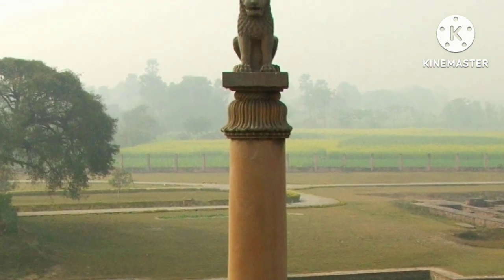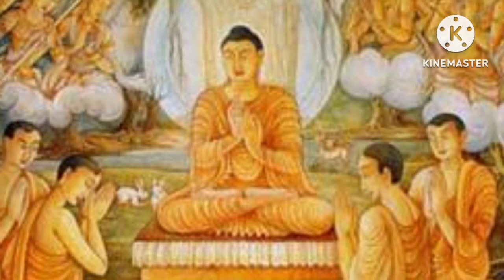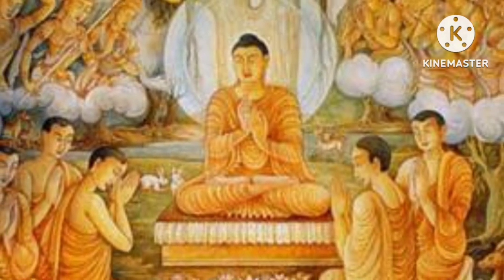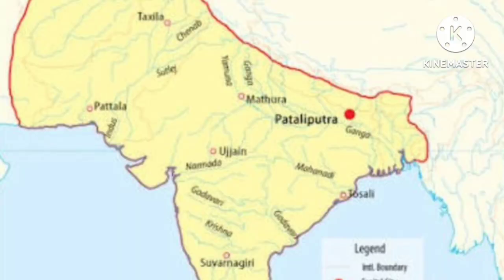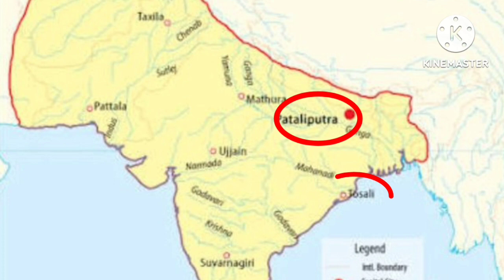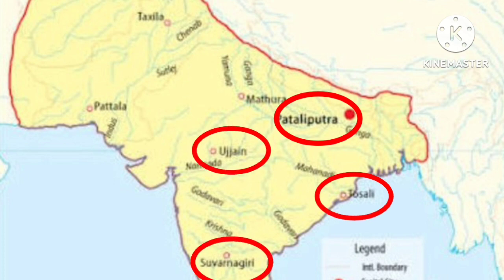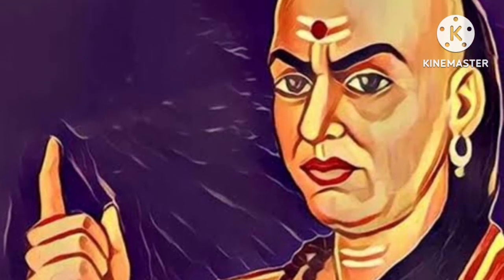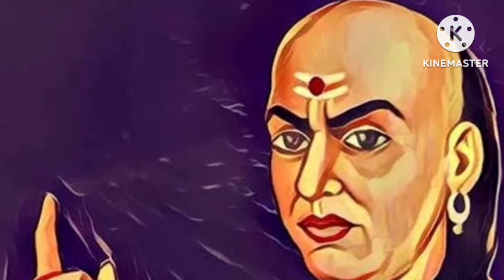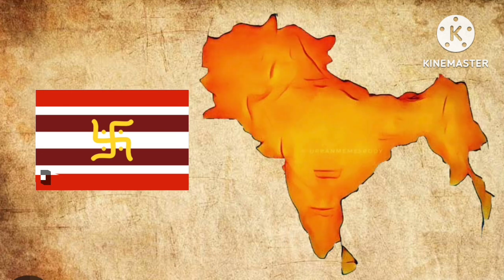He erected several pillars throughout his kingdom, exhorting people to give up violence and live in harmony with each other and with nature. He actively patronized Buddhism, built several stupas and repaired older ones, and sent evangelical missions abroad, two of which comprised his own son and daughter. The Mauryan Empire was divided into four provinces with the imperial capital at Pataliputra. The four provincial capitals were Toshali in the east, Ujjain in the west, Suvarnagiri in the south and Takshila in the north. The Mauryan Empire is the first great political entity to unite most of India and expand into Central Asia and the Middle East.